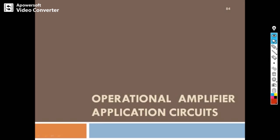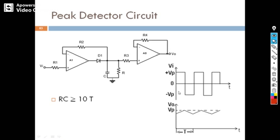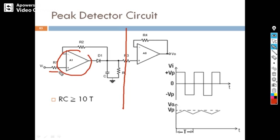We will now see the first application — how the peak detector works. This is the diagram for the peak detector. It contains the operational amplifier with a resistor, a diode, a capacitor, and another resistor used for discharging. Other than that, we have one resistor in the feedback path. The value of R is very large compared to R1 and R2.